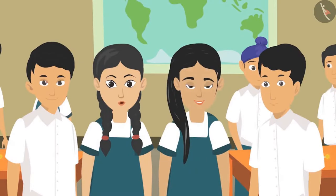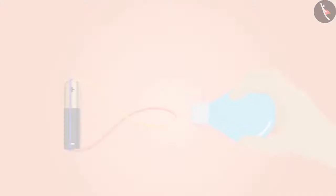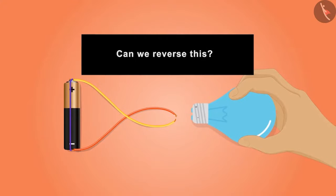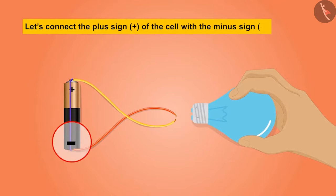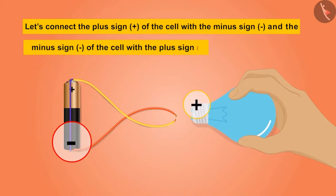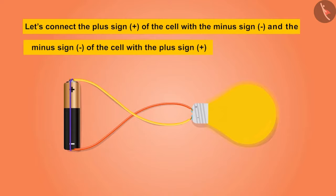'Seema Didi, look! The bulb has turned on! Oh wow! Now let us connect it upside down. Can we reverse this? Let's connect the plus sign of the cell with the minus sign of the bulb and the minus sign of the cell with the plus sign of the bulb.' Even on doing this, the bulb turns on.